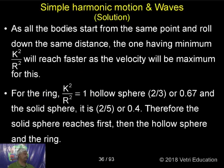Therefore, 2 by 5 is 0.4. Therefore, the solid sphere reaches first, then the hollow sphere and the ring.